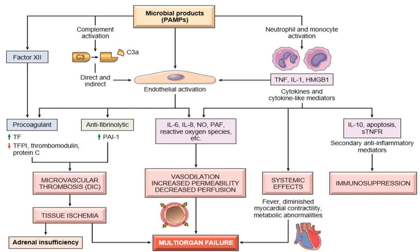Lipopolysaccharides from gram-negative bacteria react with toll-like receptor 4, causing phagocytic cells to generate a variety of pro-inflammatory cytokines including interleukin-1, interleukin-6, and interleukin-10. Along with these pro-inflammatory cytokines, various reactive oxygen species may also be generated and can further cause cell injury.